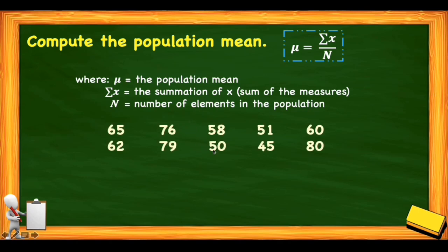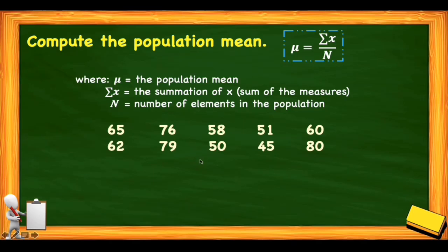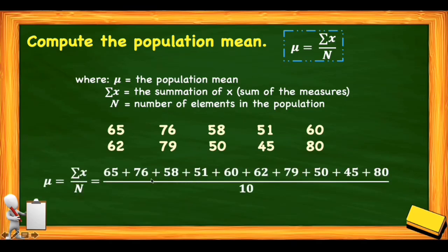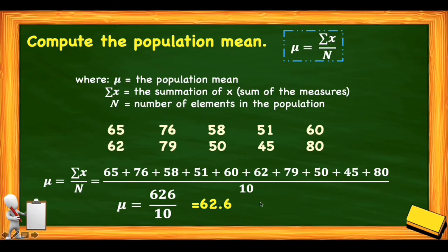Using our 10 given data — the duration the students stayed in synchronous class — to get the population mean, we add all 10 data values and divide by 10 (which is n, the number of elements in the population). The population mean is equal to 626 over 10, or 62.6.